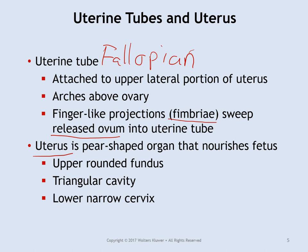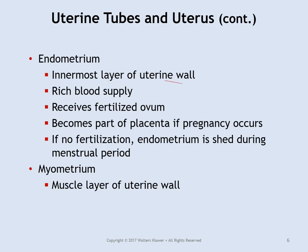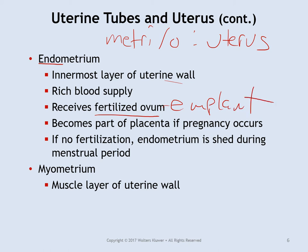The uterus is a small organ about the shape of a pear and about the size of your fist. The upper curved part is called the fundus, and the lower neck of the uterus is called the cervix — cervix means neck. The inner layer of the uterine wall is the endometrium. Anything with 'metrio' refers to the uterus. The endometrium has a very rich blood supply and lots of nutrients — this is where a fertilized egg will implant and grow. If pregnancy occurs, the endometrium becomes part of the placenta; if there's no fertilization, it is shed each month with menstruation.